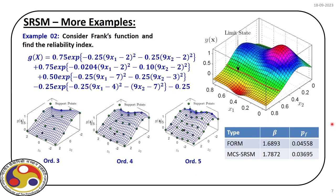Let us consider a different example — Frank's function, a complex two-dimensional function of x1 and x2, both normally distributed. The surface has two maxima and one minima. Our task is to find the optimal distance in the standard normal space where the limit surface is marked by the red line (where the surface attains a value of 0). We use Hermite polynomials of different orders — starting with order 3, then 4, and finally 5. As we increase the order, the nature of the surface closely matches the original surface.